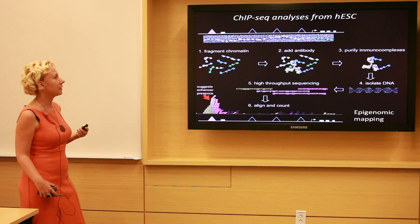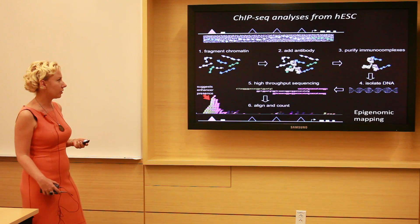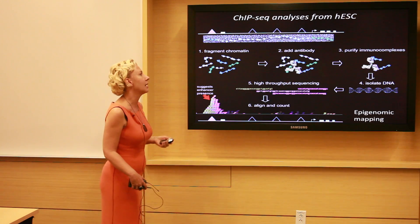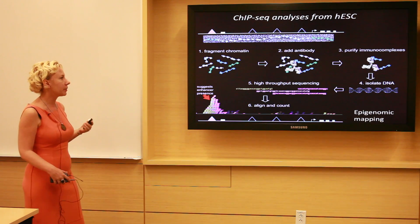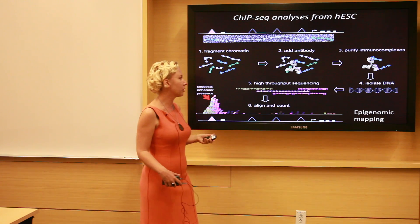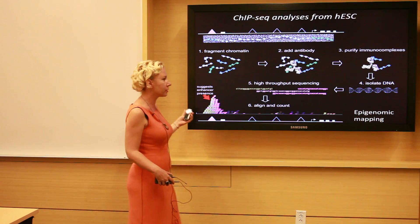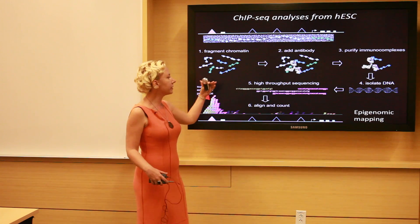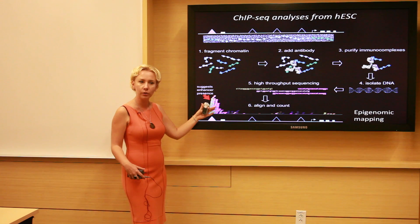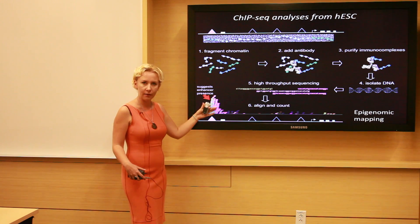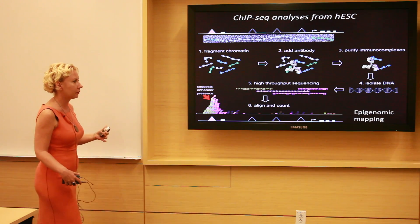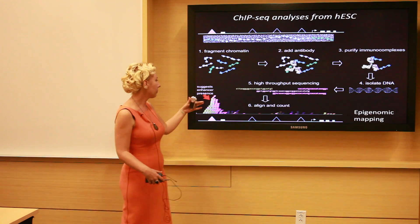We can do such genome-wide annotations through genomic technologies, for example ChIP-seq analysis, which in this example was done in human embryonic stem cells. We fragment chromatin, pull down specific fragments using antibodies to histone modifications, transcription factors, and coactivators, isolate the underlying DNA, sequence it with high-throughput sequencing, then align sequence reads and count over which portion of the genome we have the most reads — suggesting the presence of particular features and, as a combination, the presence of enhancers.